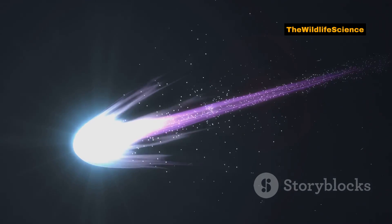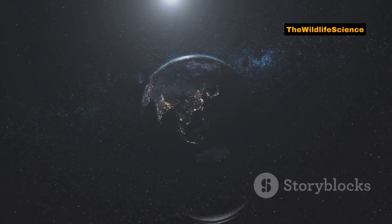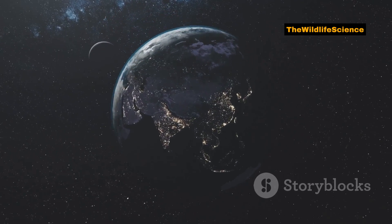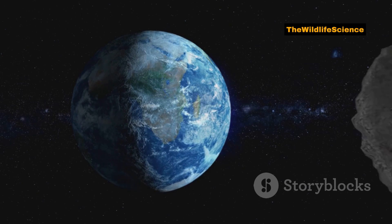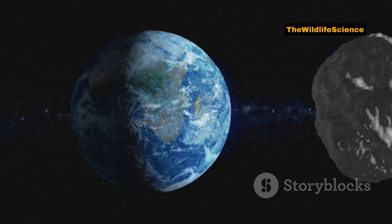Astronomers are calling it Earth's second moon, though technically, it's a co-orbital companion. Still, the symbolism is powerful. We are not traveling alone through the universe.